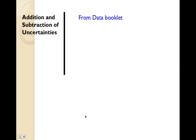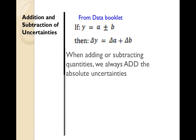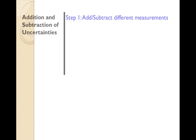When you're adding or subtracting uncertainties, if the measurement is equivalent to the first measurement added to or subtracted from the second measurement, then the absolute uncertainty of the measurement is equivalent to the addition of the two measurements' absolute uncertainties. Pretty much when you're adding or subtracting quantities, we always want to add the absolute uncertainties.